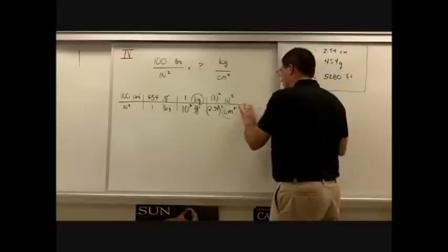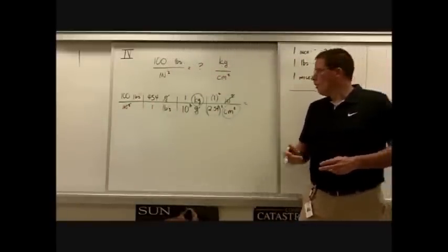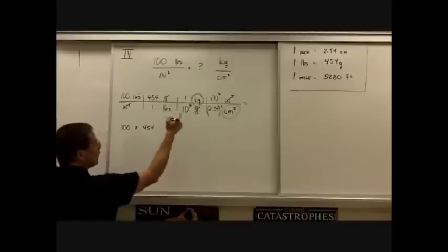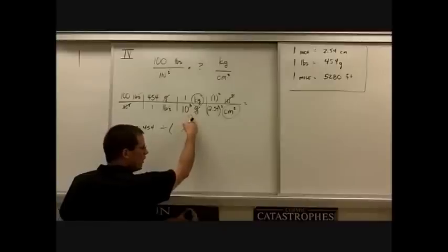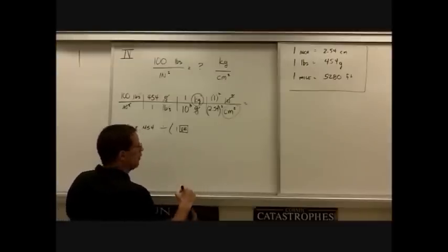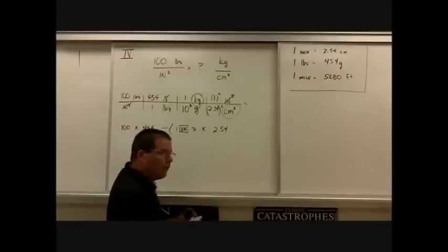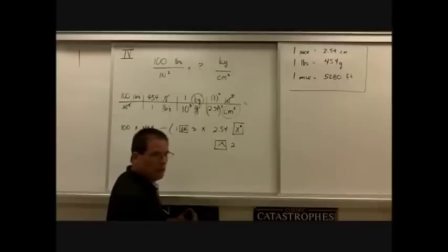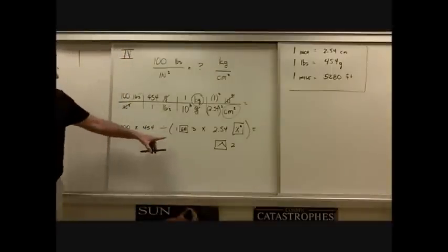The inches squared cancel out and now we get to calculate. The way I would type this in: 100 times 454, divided by — open parentheses — 1,000 times 2.54 squared, close parentheses, equals. Make sure you're using parentheses. The key was: do the linear relationship first, then square the unit and square the value. Or if you have to cube it, do the linear, then cube.